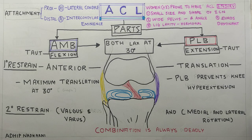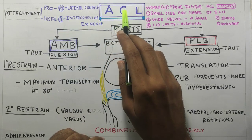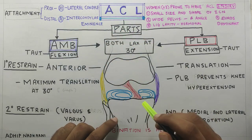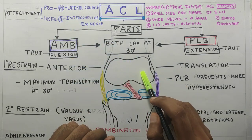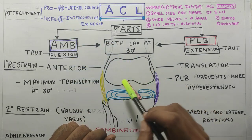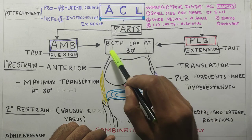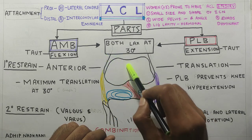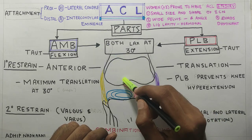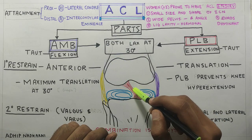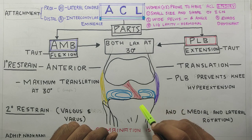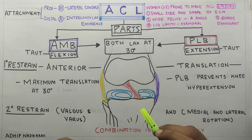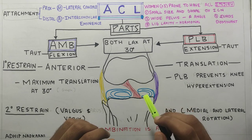ACL, that is the anterior cruciate ligament, is attached on the medial aspect of the lateral condyle of the femur. It travels anteriorly, and on the tibia it attaches to the intercondylar eminence. So now that we know its attachments, let's move on to the parts of ACL.